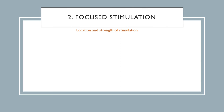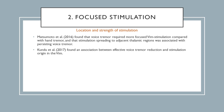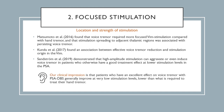The second factor relates to the location and strength of stimulation. Voice tremor may require more focused stimulation compared to hand tremor. Matsumoto and colleagues found that voice tremor required more precise VIM stimulation compared with hand tremor, and that stimulation spread into neighboring thalamic regions was associated with persisting voice tremor. Kundu and colleagues found an association between effective voice tremor reduction and stimulation origin in the VIM. Our group demonstrated that high amplitude stimulation can aggravate or even induce voice tremor in patients who otherwise have good effect at lower stimulation levels in the PSA, and that patients with excellent PSA DBS effect generally improve at very low stimulation levels — often lower than what is required to treat their hand tremor.